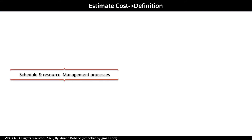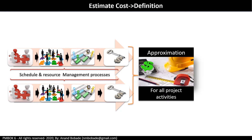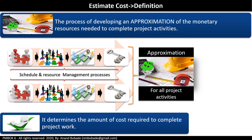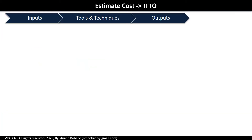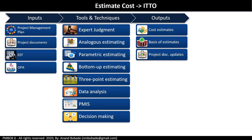The process definition: based on input from schedule and resource management processes, it is the process of developing an approximation of the monetary resources needed to complete all project activities. It determines the amount of cost required to complete the project work. There are various inputs, tools and techniques, and outputs. Many tools and techniques were already covered in schedule management to estimate activity duration. The key output is cost estimates.